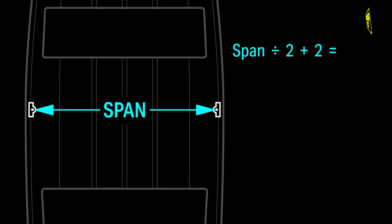Divide the span by two, then add two. This number is called the inboard loom length.